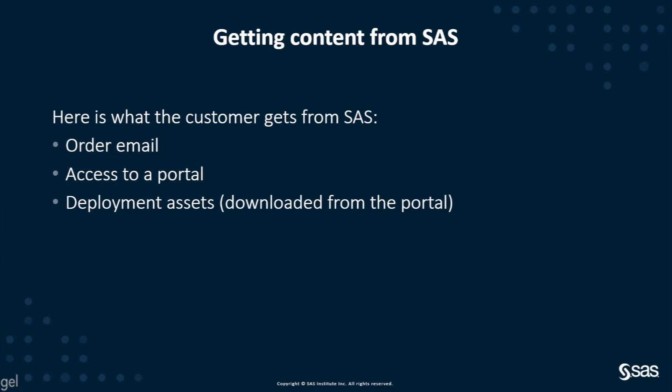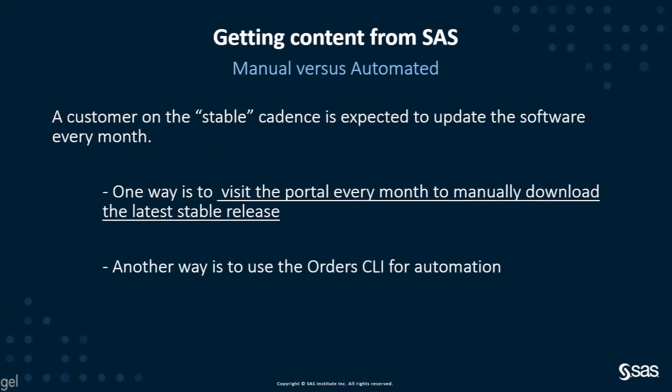When the customer purchases the SAS offering, he will get two things: the order email and access to the mysas.com portal from where he can download the deployment assets. As you've seen in part one, you can log in to the mysas.com portal, select your version, select your cadence, and click a button to download your deployment assets.